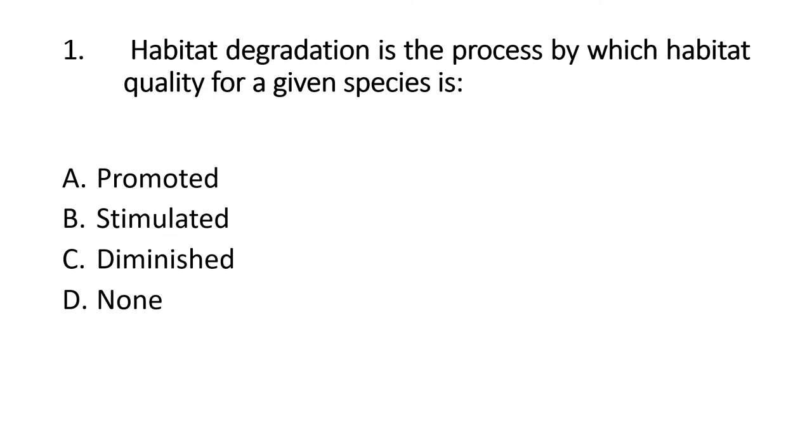Question 1: Habitat degradation is a process by which habitat quality for a given species is... We know that habitat is a place of living. Habitat degradation occurs when the environment quality is low and reproduction is affected.